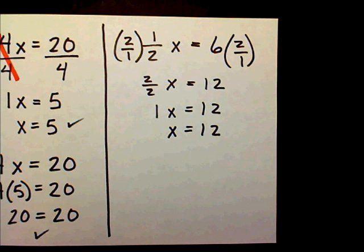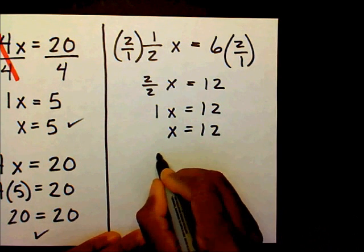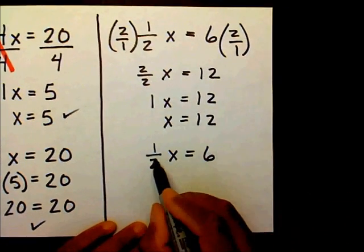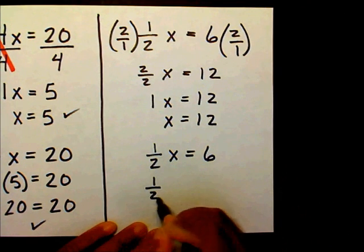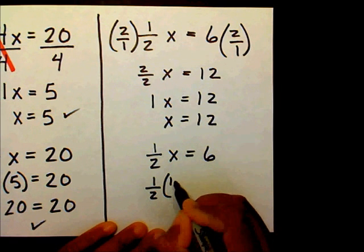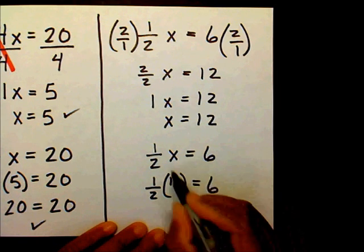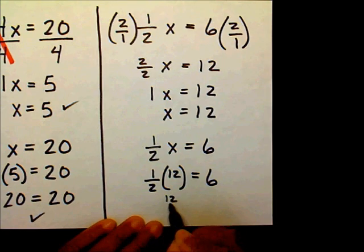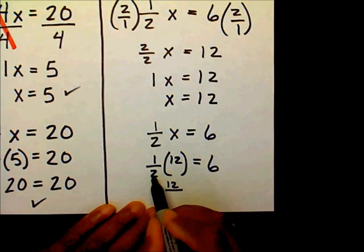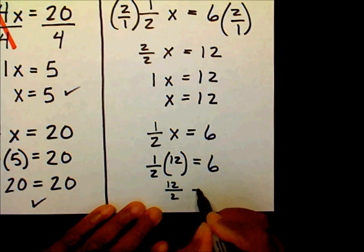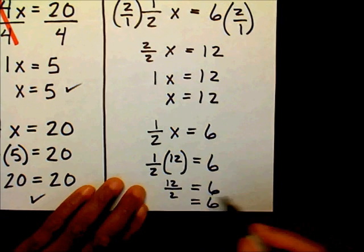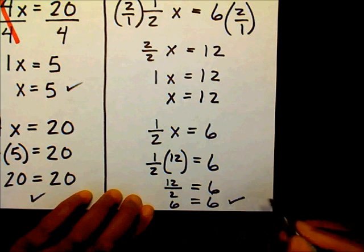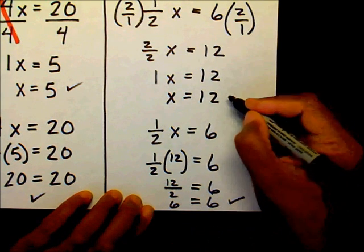Let me check to see if x does actually equal 12. I have one-half x equals 6. I'm going to substitute 12 for x, so I have one-half times 12. 1 times 12 is 12, and 2 times 1 is 2, equals 6. 12 divided by 2 is 6, so 6 equals 6. I have the same on both sides, and I know that x equals 12.